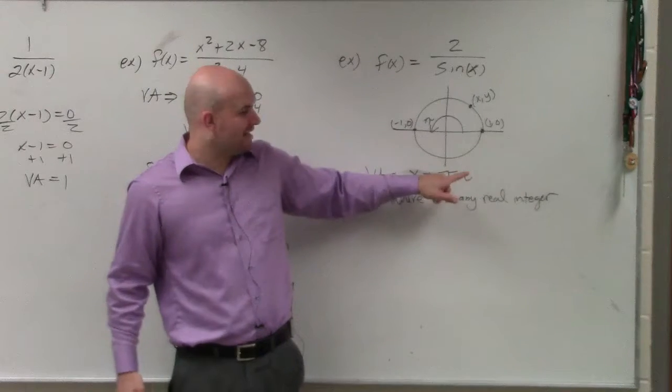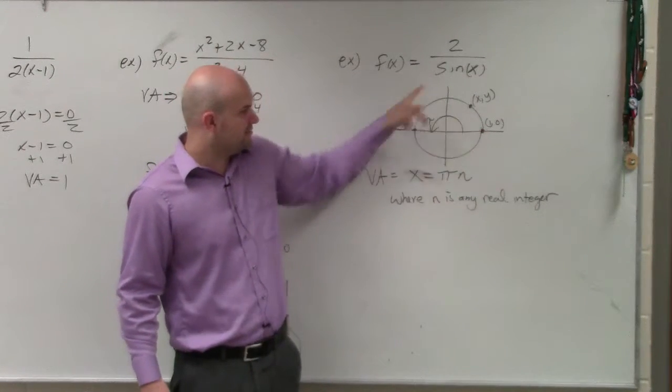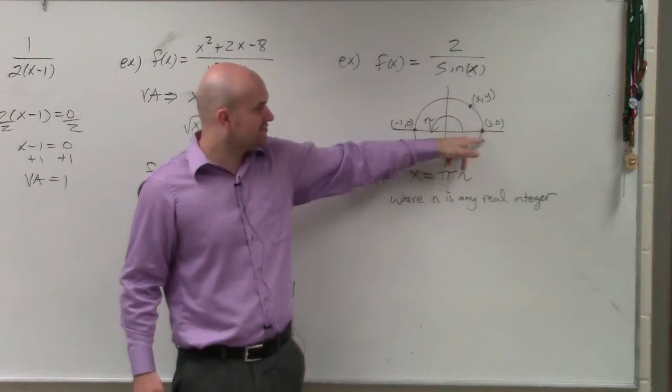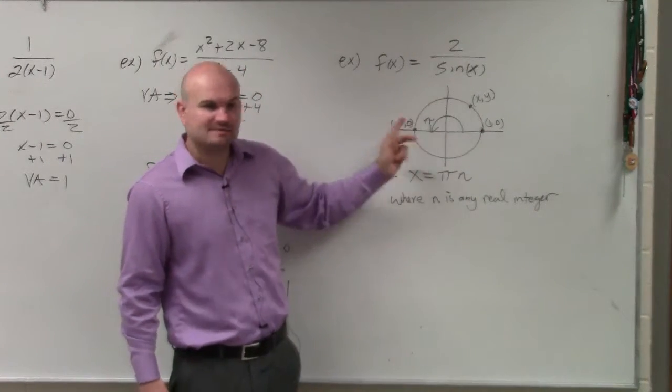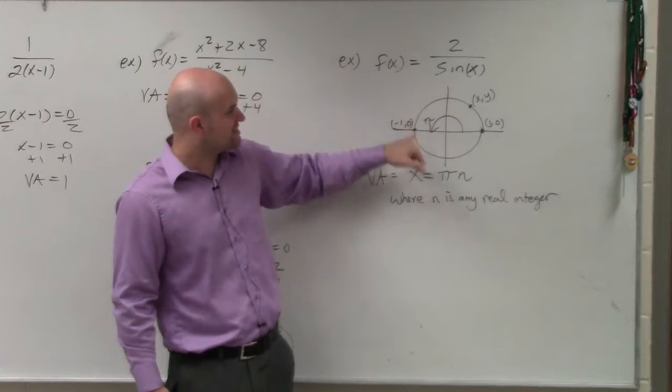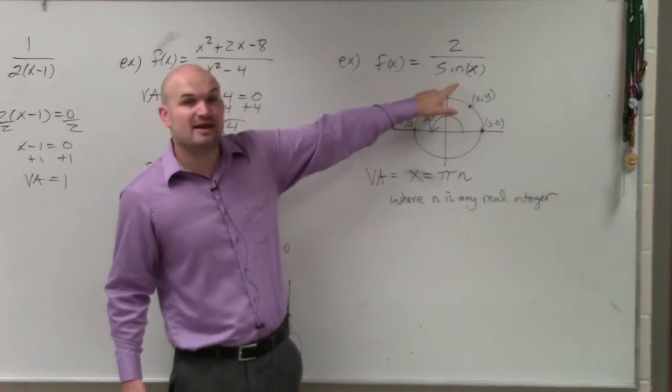So if you think about that, because if n is 0, we have that as 0. If n is 1, we have pi. If n is 2, we have 2 pi. If n is 3, we have 3 pi. It keeps on going. In each one of those sections, the sine of those angles is always going to give you a y-coordinate 0, which is going to make this undefined.